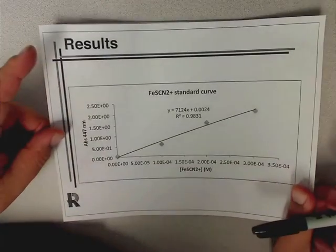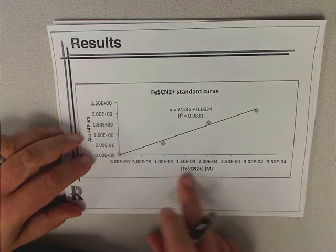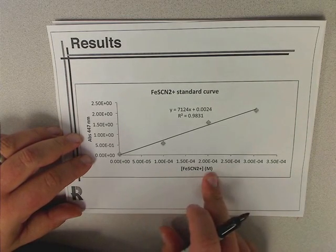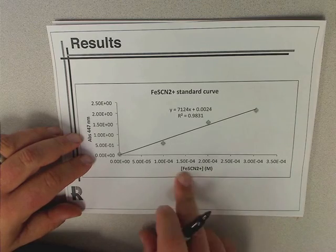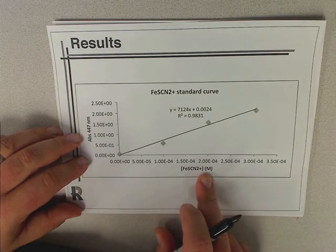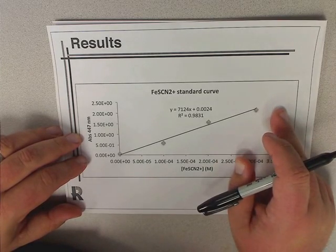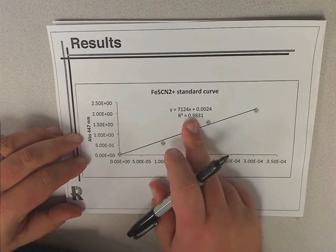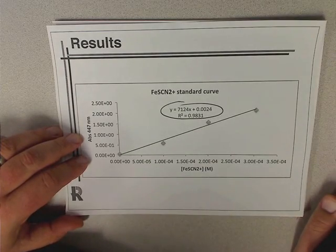Now the first thing we need to do is generate a standard curve. So you'll need to take your absorbance data. This is some example data that I generated. The concentration will be listed on the bottles. You'll plot that on the x-axis, you'll plot the absorbance value on the y-axis, and you'll fit it to a linear curve. So you should get a formula. You'll need to use this formula when we start working up our data.